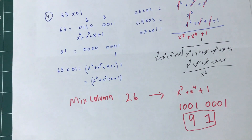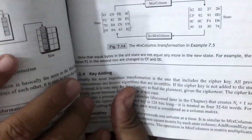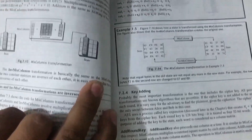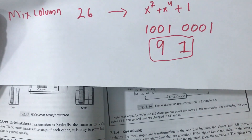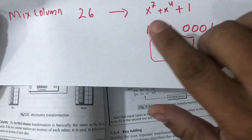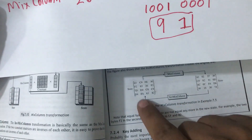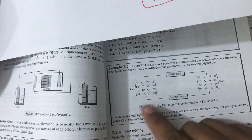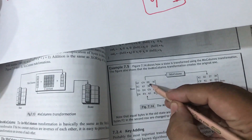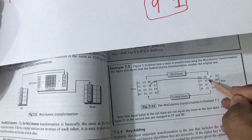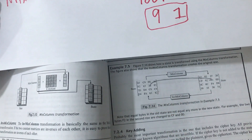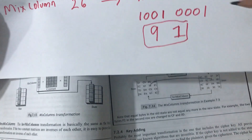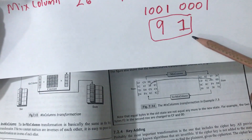So let's verify this from the book. This is what we have got so far — we got 91 when we transform 26 using mix column. Let's look at the table. Look at my 26 — and 26 is transformed into 91 using mix column. I hope you guys are seeing it. This 26, what we just calculated using the mathematical tools, has transformed 26 into 91. And indeed, this is the answer we were getting.